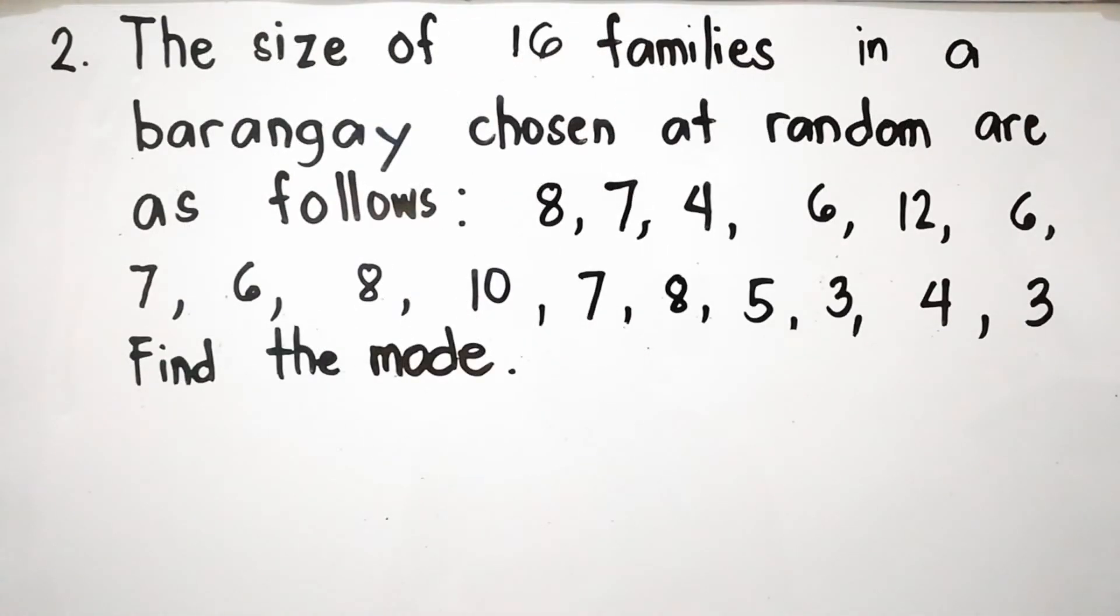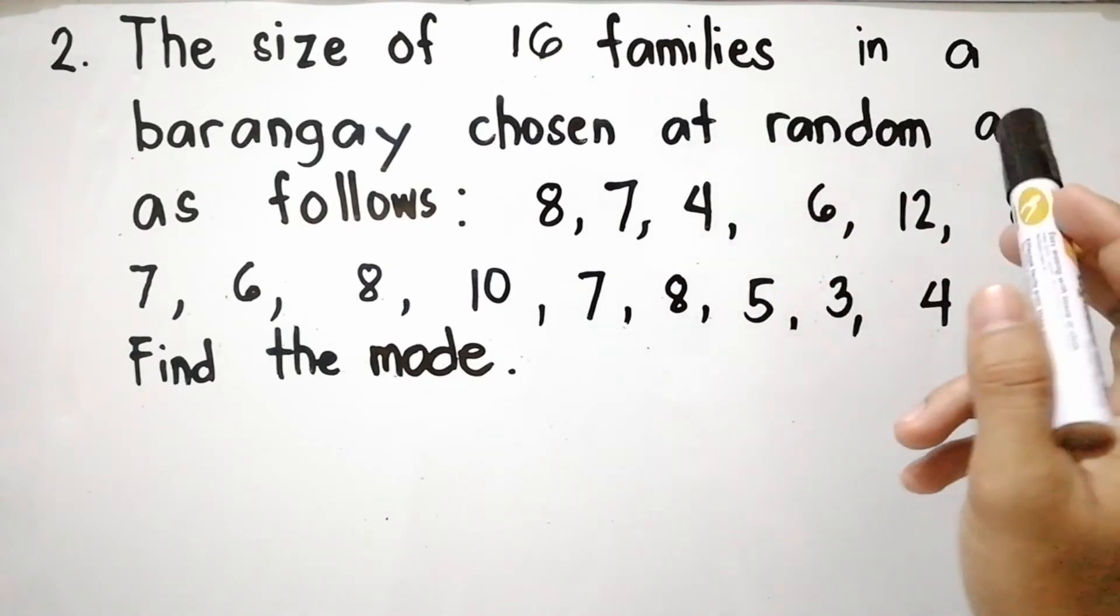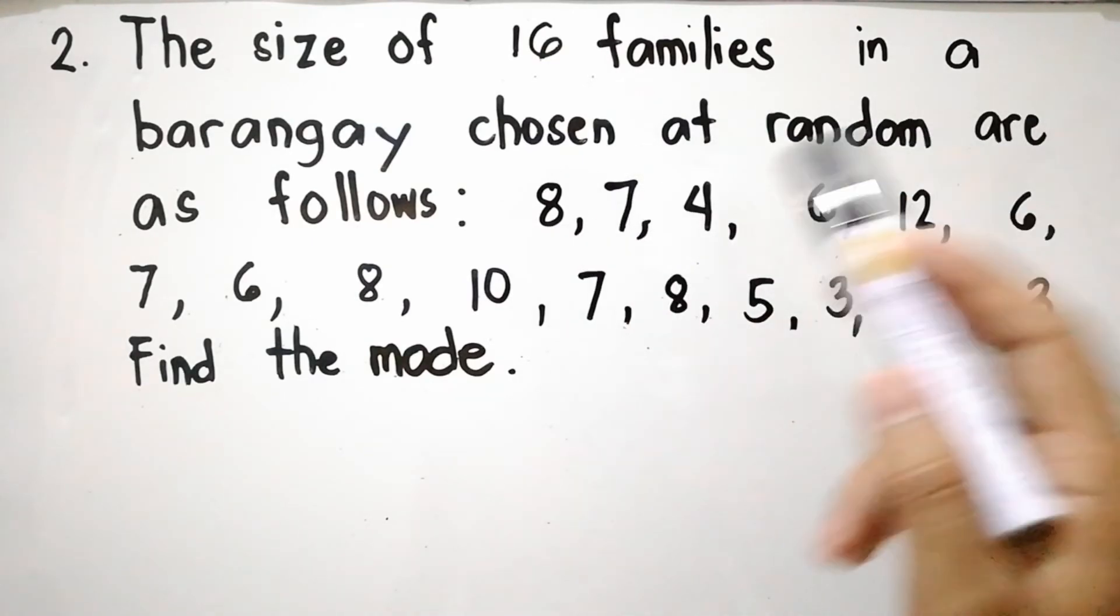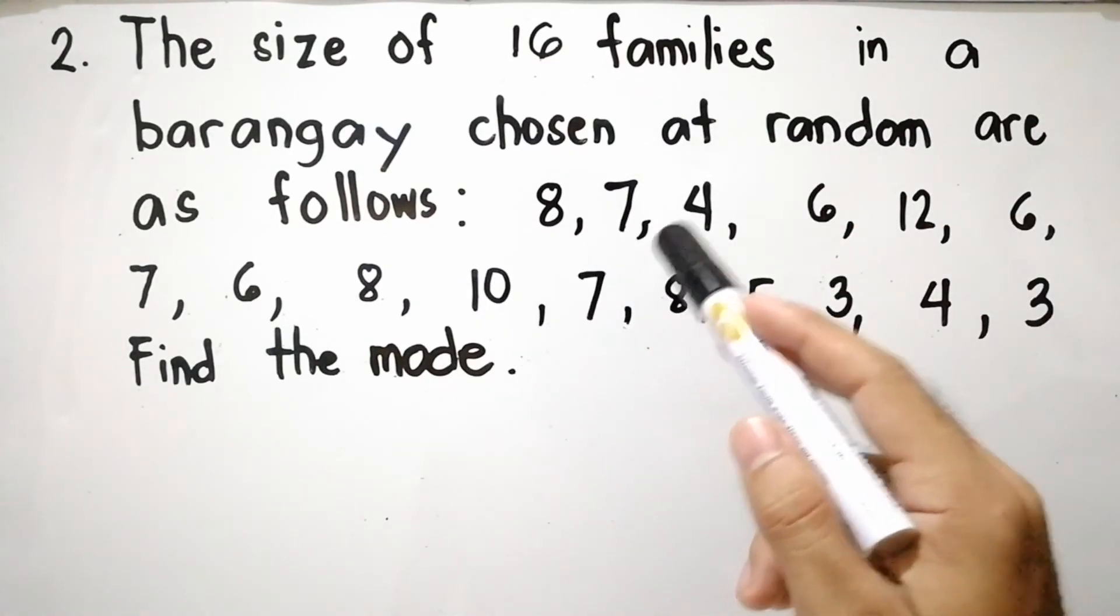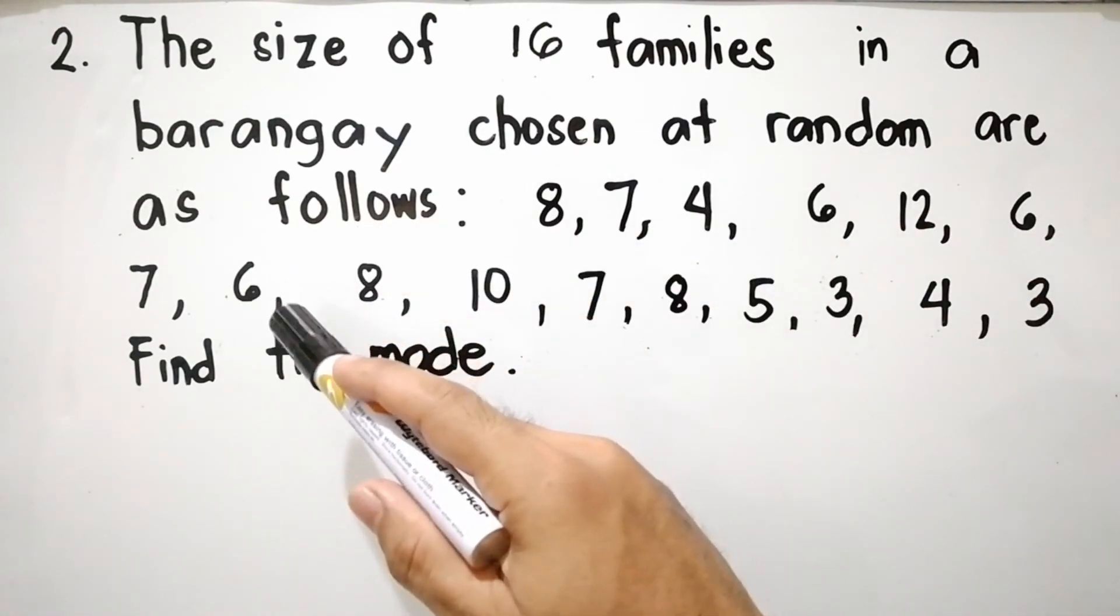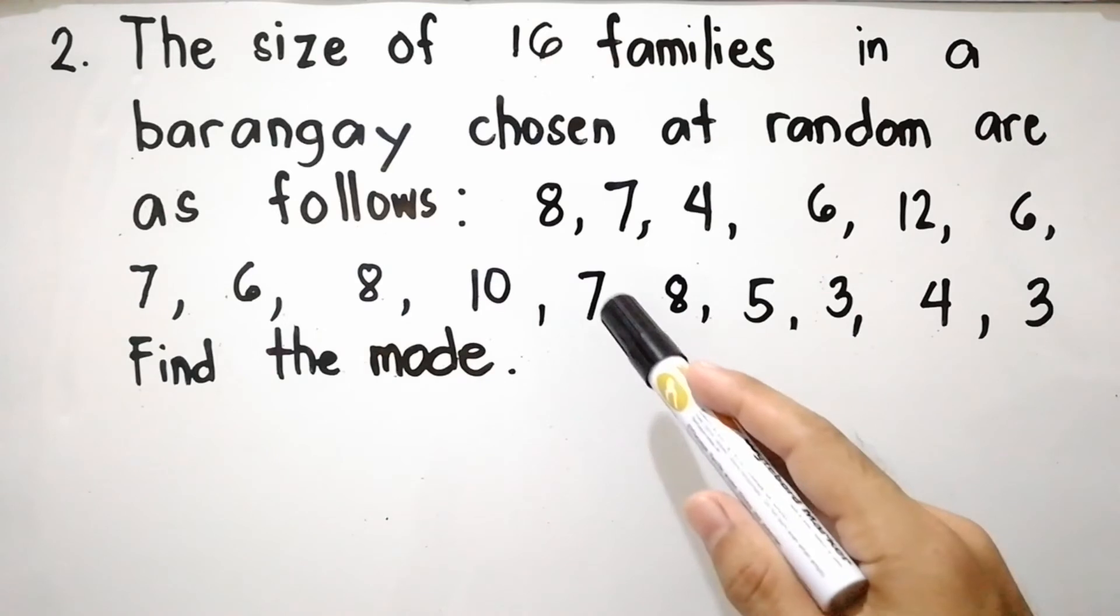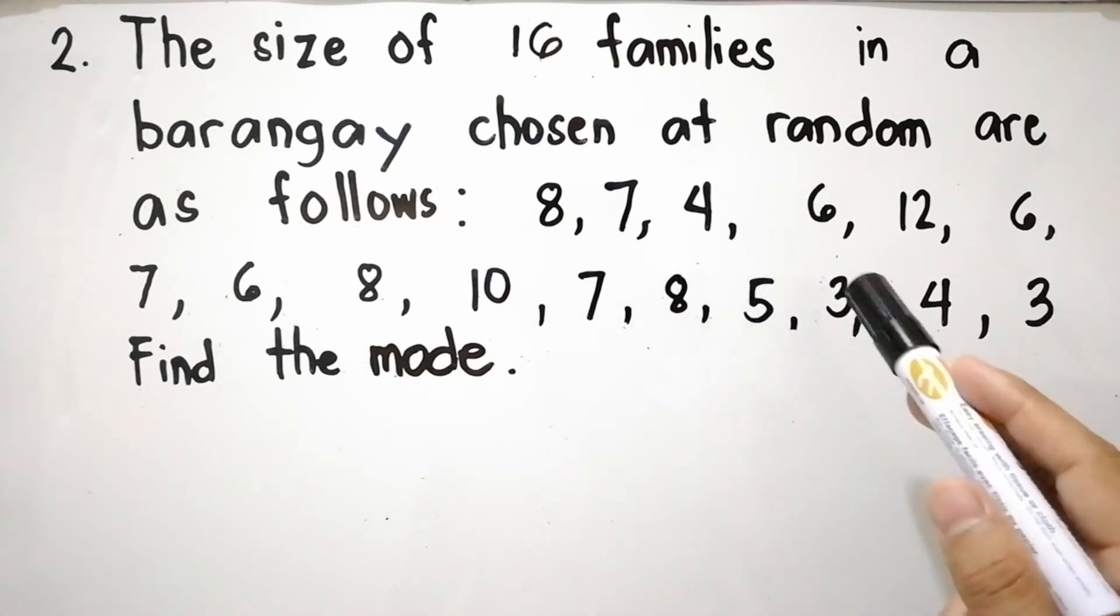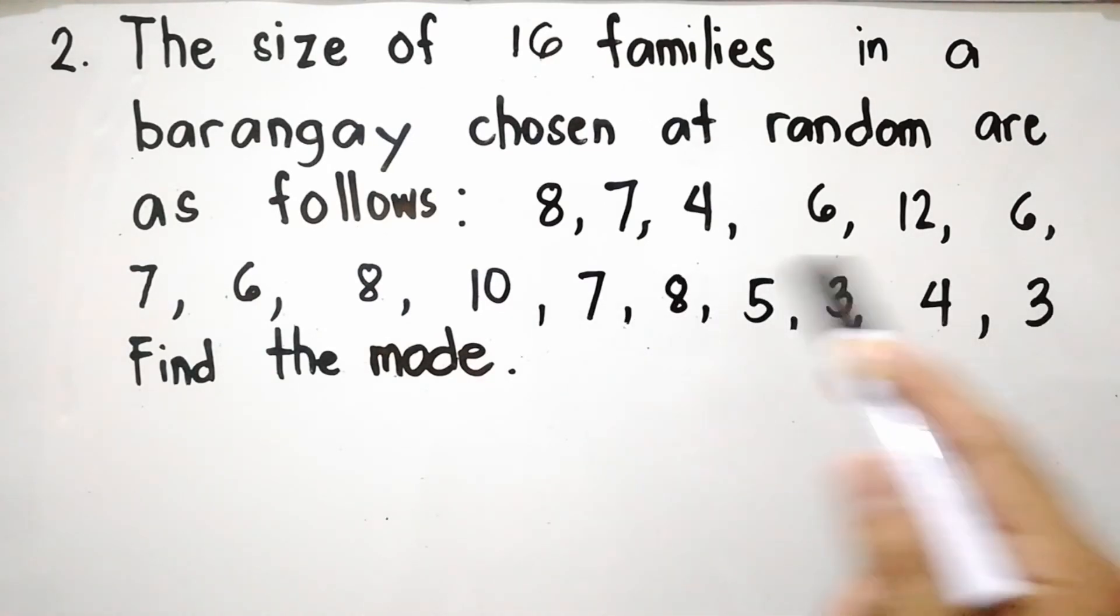Let us have example number two. The size of 16 families in a barangay chosen at random are as follows: 8, 7, 4, 6, 12, 6, 7, 6, 8, 10, 7, 8, 5, 3, 4, and 3. Find the mode.